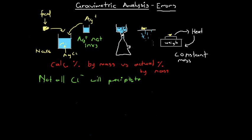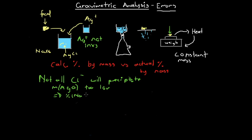If we don't add excess silver ions, we'll be left with chloride ions that don't precipitate. As a result, we'll have less silver chloride precipitate, and our measured mass of silver chloride will be too low — lower than it should have been. Because of this, we'll think there are fewer chloride ions and less sodium chloride than there actually are, so our calculated percentage by mass of sodium chloride will be lower than the actual percentage by mass.